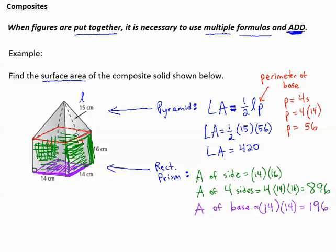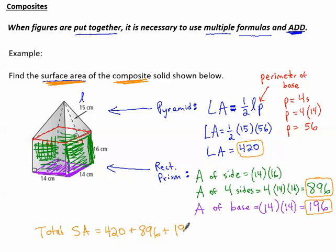So now we've got to put all of that together to get the surface area of that composite solid that's shown. So we've got to take all of the areas that we computed. The lateral area from the pyramid, the area of the four sides of the rectangular prism, and the area of the base of the rectangular prism. So our total surface area of this funny solid is 420 plus 896 plus 196. And all together, that makes 1,512 centimeters squared.